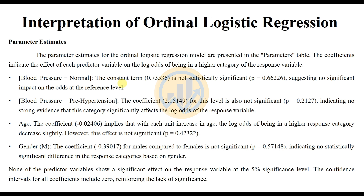For pre-hypertension blood pressure, the coefficient of 2.15 is also not statistically significant (p = 0.21), indicating no strong evidence that this category significantly affects the log odds of the response variable. For age, the coefficient of minus 0.02 implies that with each unit increase in age, the log odds of being in a higher response category decrease slightly. However, this effect is not statistically significant (p = 0.42).